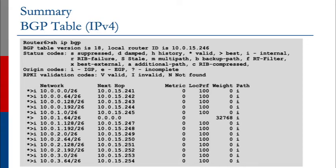Looking at the next table on the screen, the 'show ip bgp' output displays the BGP table. This is an excerpt from an active router in one of the technical workshops that we offer. In this output, you see the list of prefixes that have been announced, the IP addresses of the next-hop routers these were learned from, and various other BGP attributes like the metric, local preference, weight, and path, which we will cover going forwards in this series.